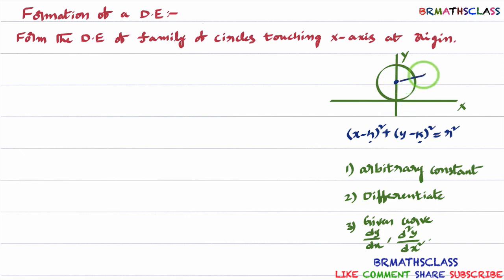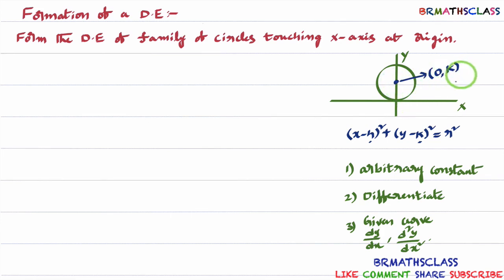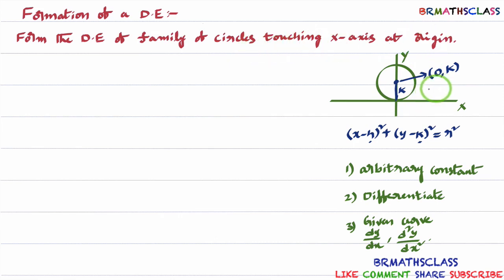So what is the center of this circle? Its center is (0, k). What is this length? As this point is (0, k), this length is nothing but k. You observe that this length is nothing but the radius. So the radius of this circle is k. I will now write the equation of the family of circles which touches x-axis at the origin.